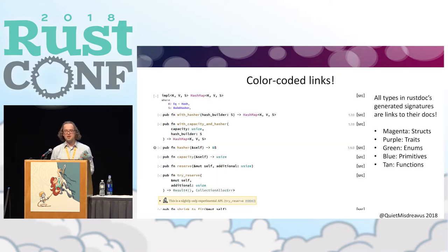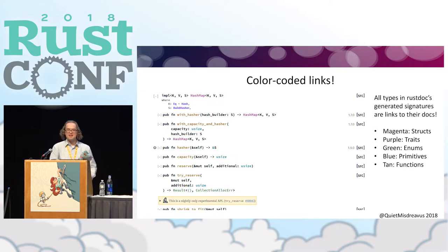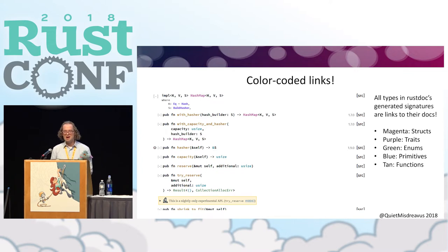One smaller feature that is nominally useful but kind of neat: whenever Rustdoc outputs a type signature for a function, or the listing of fields in a struct or whatever, those are all hyperlinks to the definition of that type or trait. And they're all color coded — structs have a color, traits have a color, primitives have a color — so you can see at a glance how something is implemented.